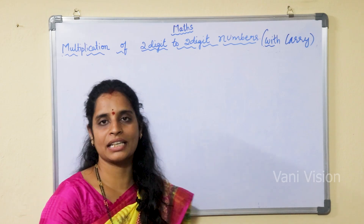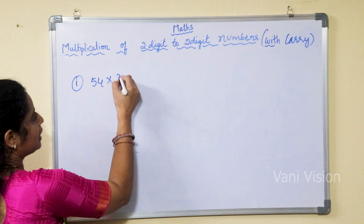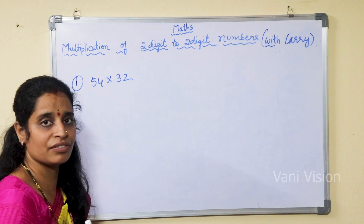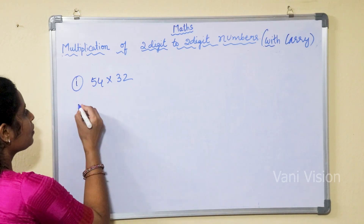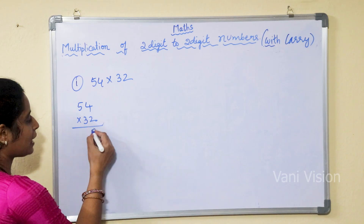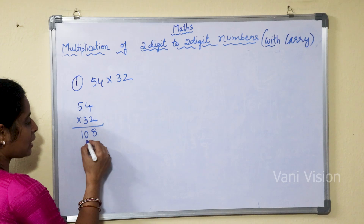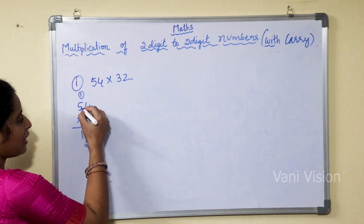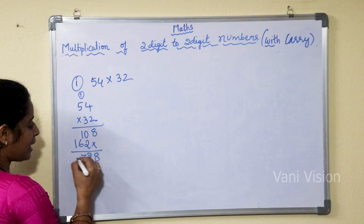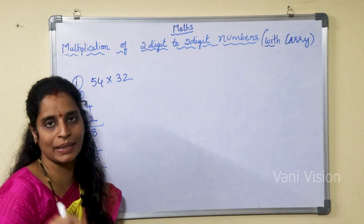The first example I am going to take is 54 into 32. First we will do it in the general way as we have learned it. 54 into 32: 2 fours are 8, 2 fives are 10, 3 fours are 12, 3 fives are 15 plus 1 is 16. So our answer is 1728.